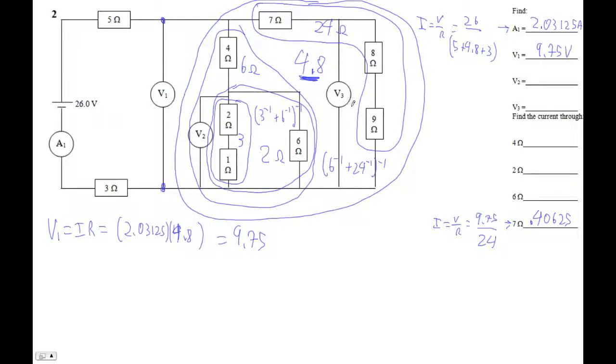Now let's see, what else can we pick off? We can find V3. V3 is IR. The current here is that current we just figured out, the 0.40625. And then V3 goes here to here, so we get an 8 and a 9. So times 17. I get 6.90625.